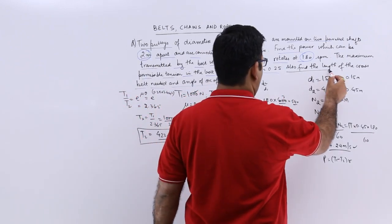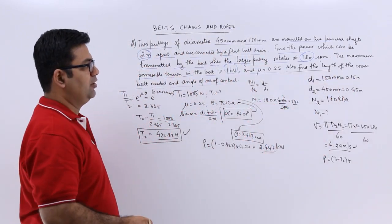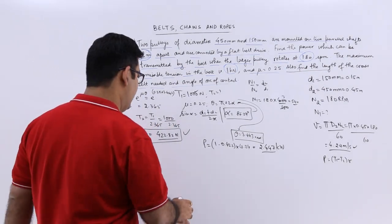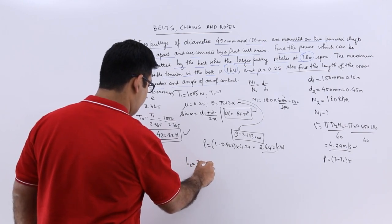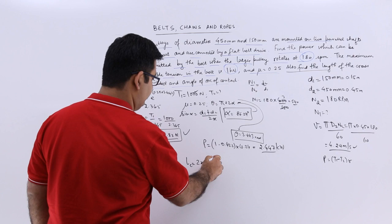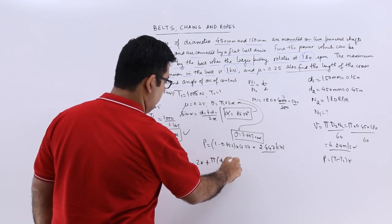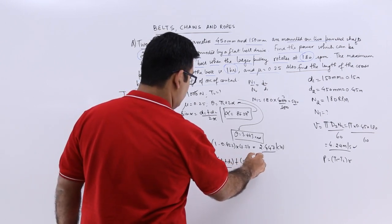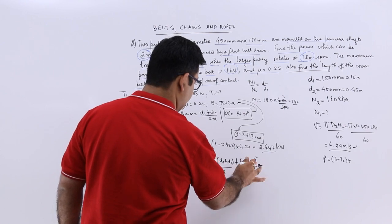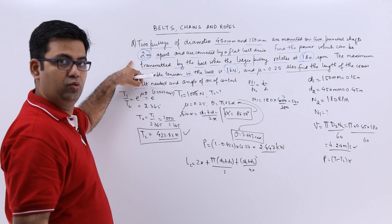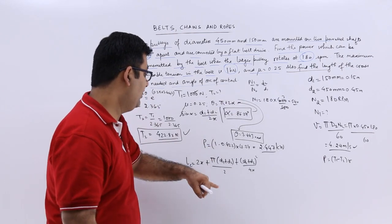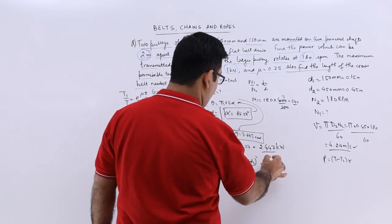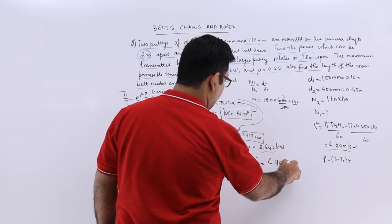After this we will go on to the next part of the question which asks us to find out the length of the cross belt. Now the value of the cross belt length is LC which is 2x plus pi into d1 plus d2 by 2 plus d1 plus d2 whole square upon 4x. So you know x is 2, you know d1 is 0.15, d2 is 0.45. Put in the values over here. So the length of cross belt required will come out to be 4.987 meters.